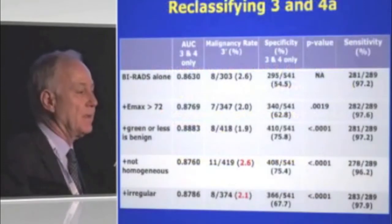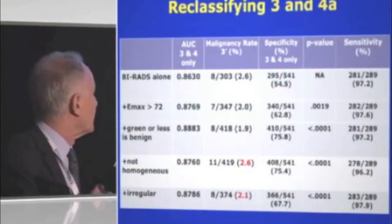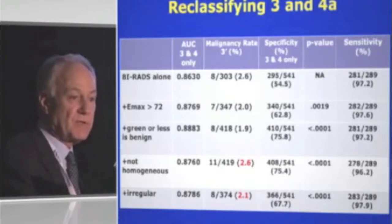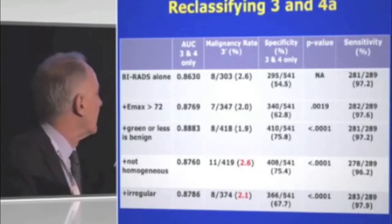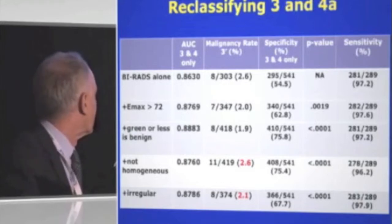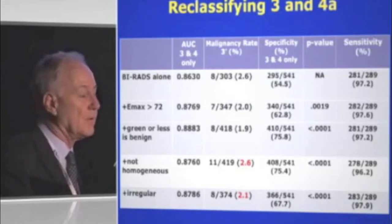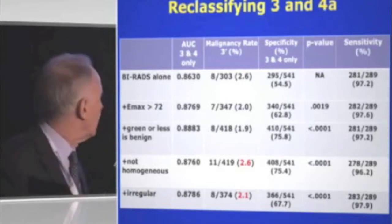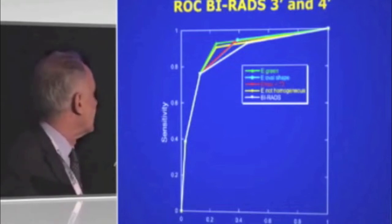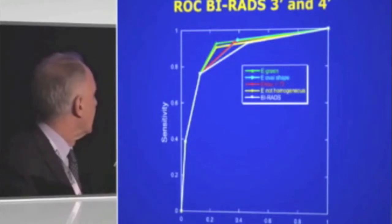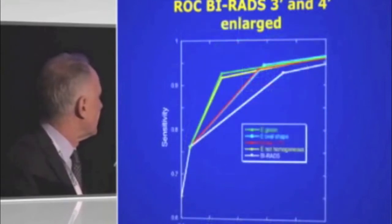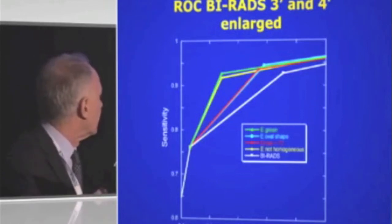Applying that rule to just the BIRADS 3s and 4s, the malignancy rates, specificities, and sensitivities all improved as the model suggested. The ROC curve shows that compared to B-mode BIRADS alone (the white line), all added features improved the curve toward the top-left corner. The best two features were the color green and homogeneity of the lesions.